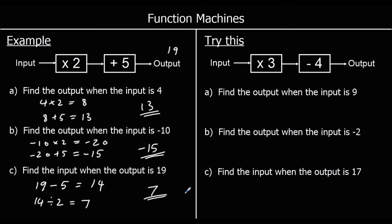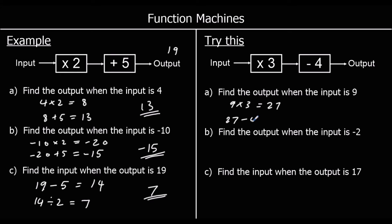Find the output when the input is 9. So we're putting 9 into the machine. This machine says times by 3 and then take away 4. So 9 times 3 is 27, and then 27 take away 4 is 23.